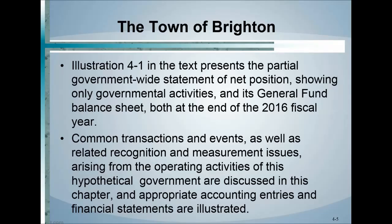We're going to use a town called the Town of Brighton and do some illustrative journal entries for its 2017 fiscal year. We'll have the end of 2016 and the beginning of 2017. We're going to have both the general fund general ledger and the governmental fund — the government-wide financial statements. The governmental/government-wide entries will be shown in red so we can distinguish between the two.